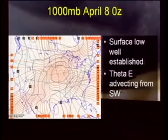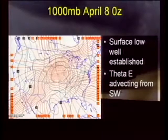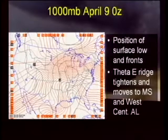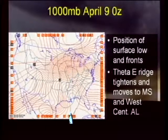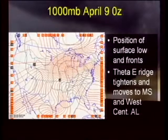At 1,000 millibars, using this as a proxy for the surface, the low is located in western Illinois or southern Iowa. Theta-E is advecting from the southwest — the red lines indicate theta-E values looking at a combination of temperature and moisture — so we're getting theta-E ridging through Louisiana, Mississippi, and up into northern Alabama and central Tennessee. By the time of the event, that ridge shifts to the western part of Mississippi. There's your 1,000 millibar low, with pretty strong warm air advection and strong moisture advection implied by the theta-E ridging up into western Mississippi and central Alabama.